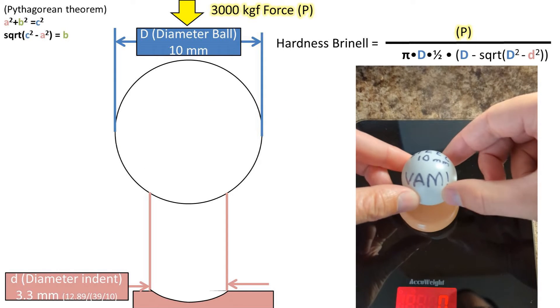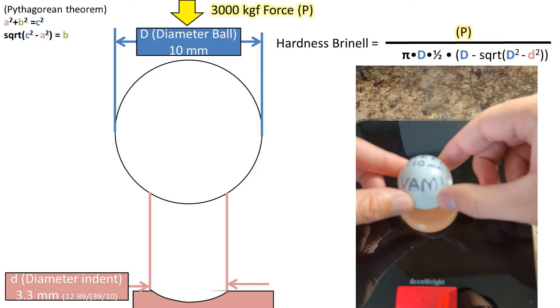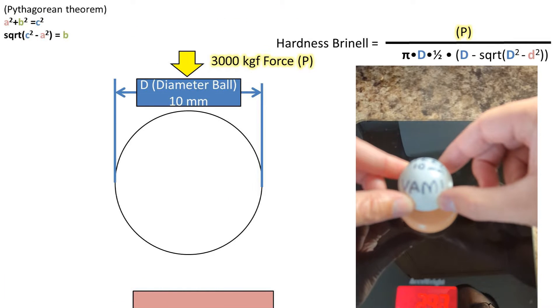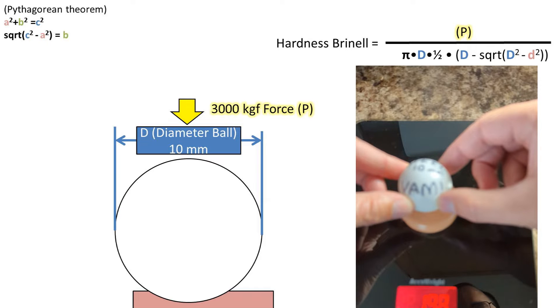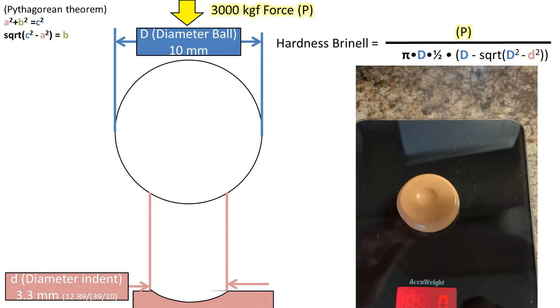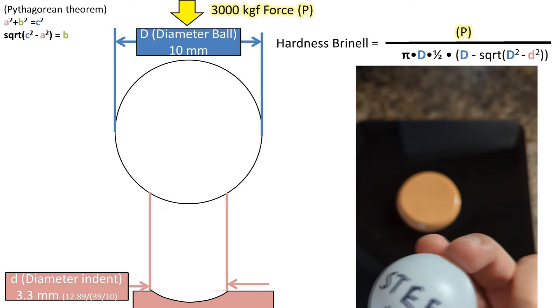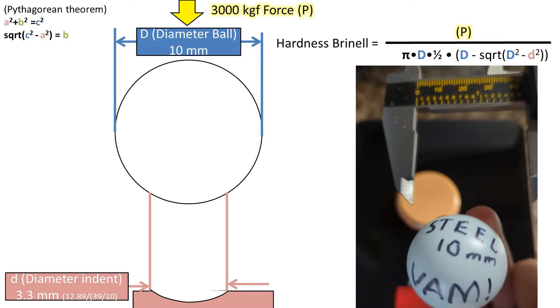We'll place it on a substance which could represent a steel plate but is actually putty, and we'll apply a force of 30 grams but we'll say it is 3000 kilograms force instead. These values are typically the standard for using a Brinell testing machine.